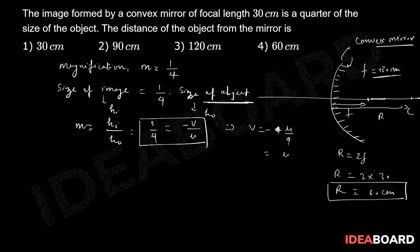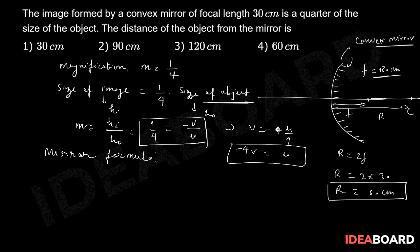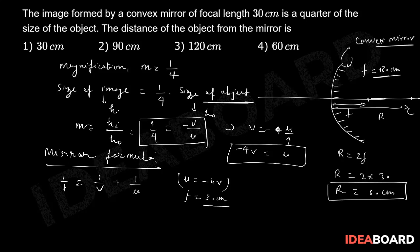We got one relation: v is equal to minus u by 4, or equivalently, u is equal to minus 4v. Now, the mirror formula says that 1 upon f is equal to 1 upon v plus 1 upon u. We have one relation between u and v, so I can put u equal to minus 4v in this relation, and f is equal to 30 centimeters, to obtain the value of v.